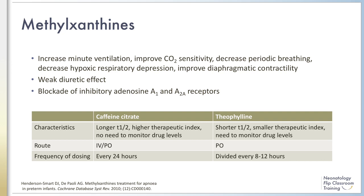The primary mechanism of action is thought to be blockade of inhibitory adenosine A1 receptors, which leads to excitation of respiratory neural output, and adenosine A2A receptors, which are located on GABA neurons.